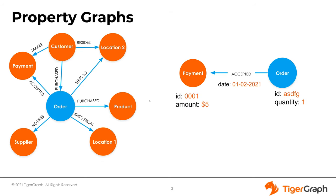There are a couple of different types of graph databases, but today we'll be focusing on the property graph. This is what TigerGraph is, and it's one of the more widely used types. Graphs are created from nodes and edges. Nodes are individual data points, whereas edges show the relationship between multiple data points. In a property graph, you can have attributes on both your nodes and edges. Those attributes are essentially the same as key-value pairs in a relational database. For example, a payment has a unique identifier and an amount attribute. An order has a unique ID and a quantity attribute. Even our edge has an attribute telling us the date an order was accepted. A property graph allows key-value pairs of attributes under both nodes and edges.